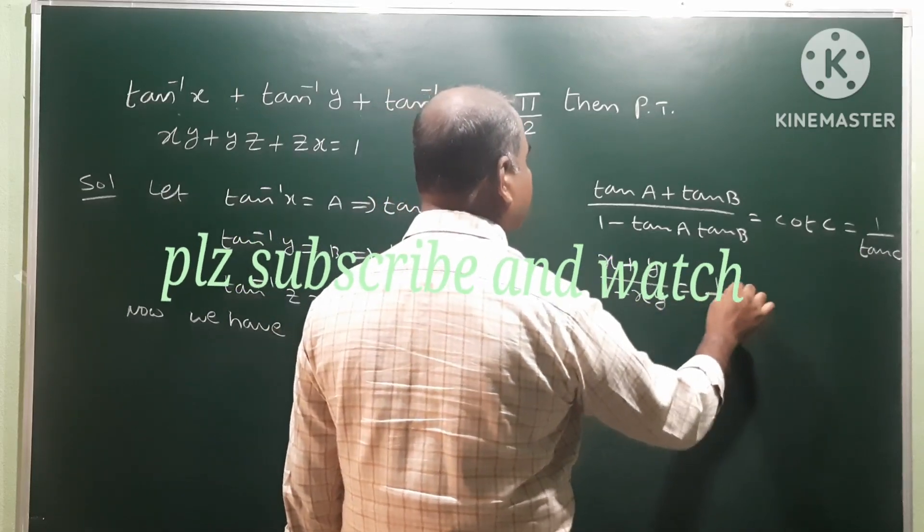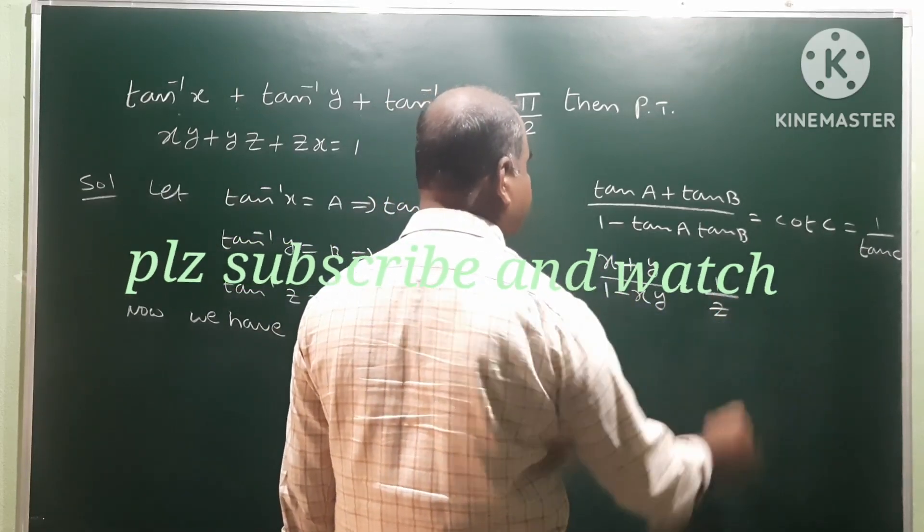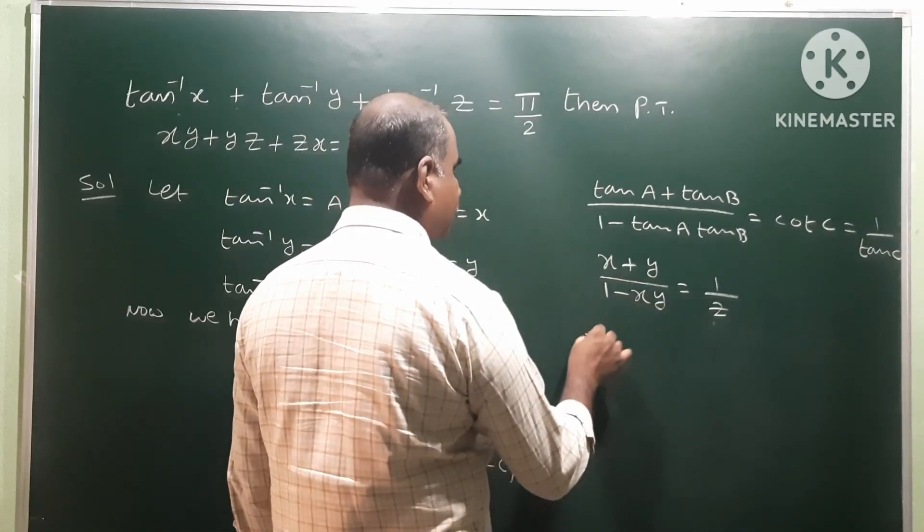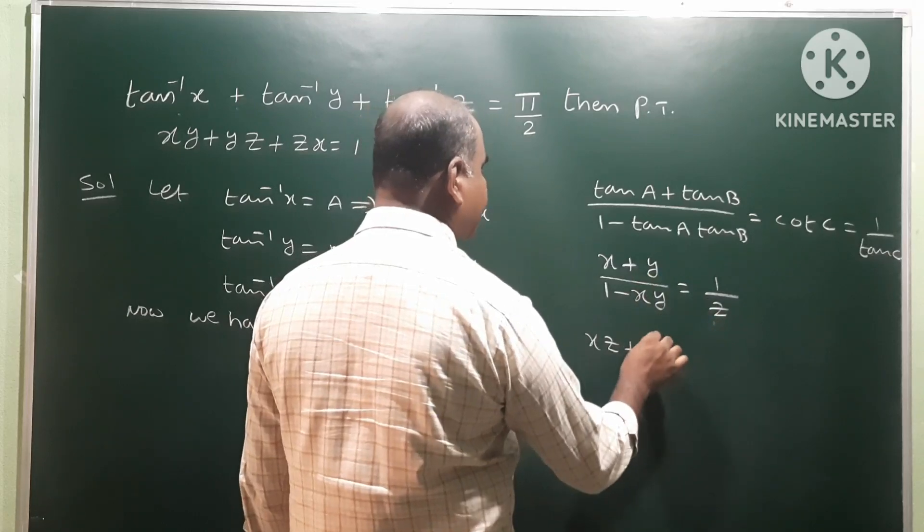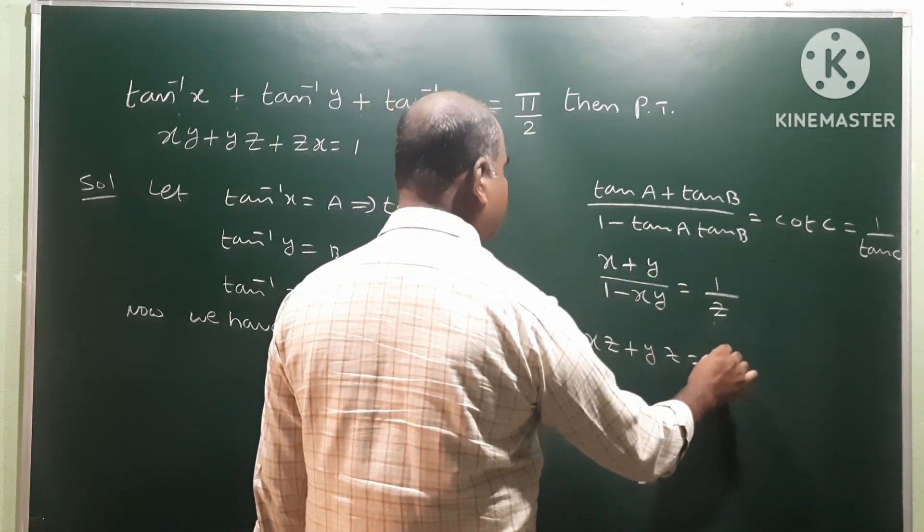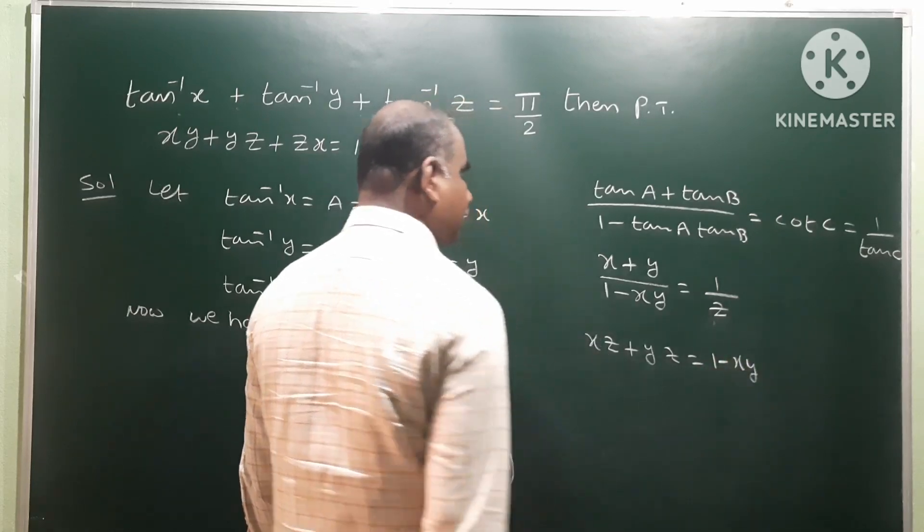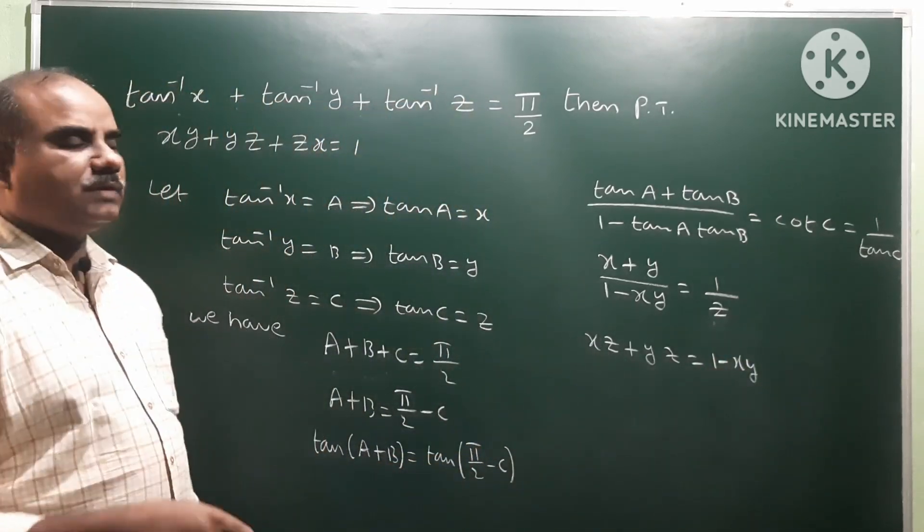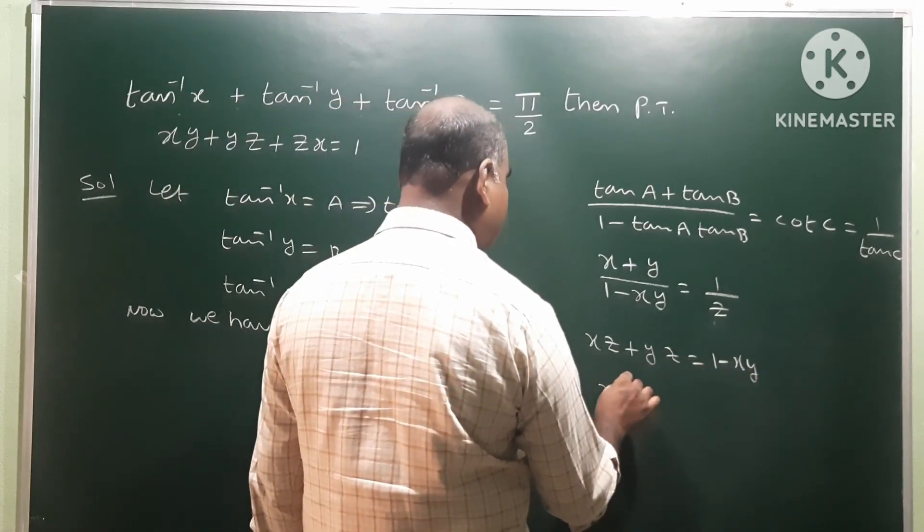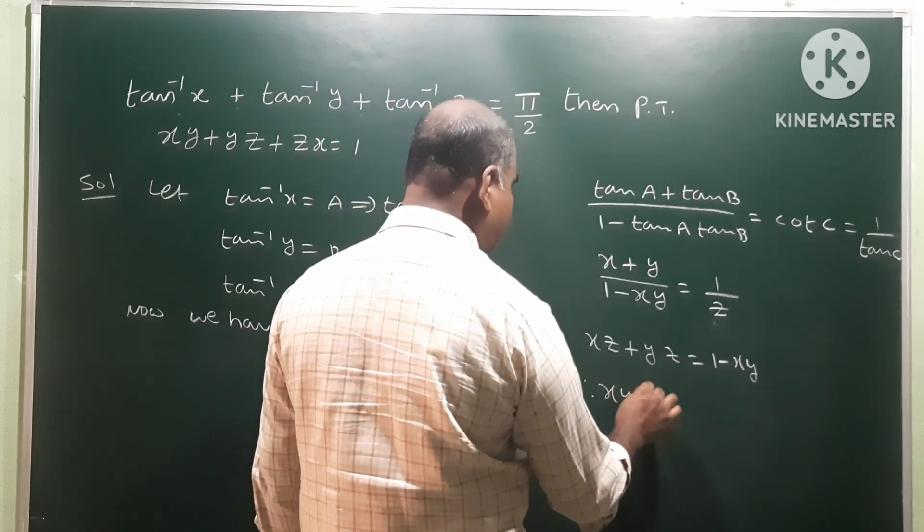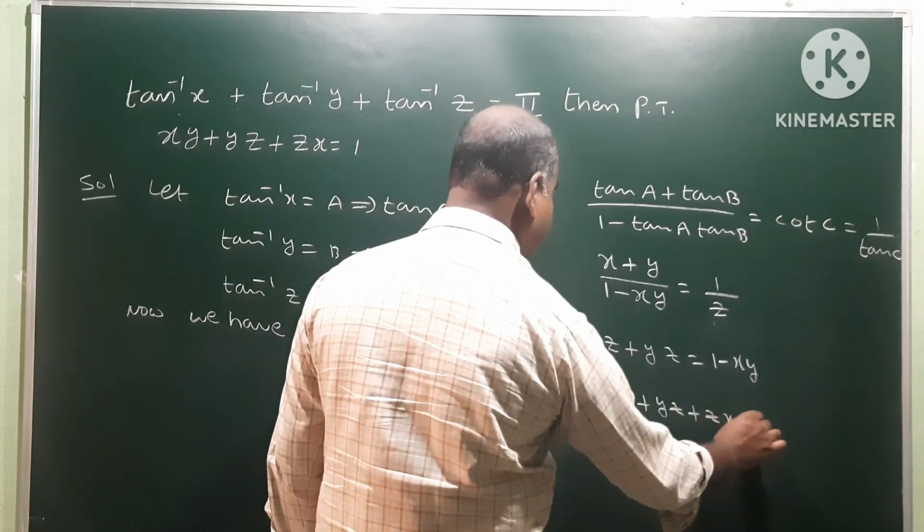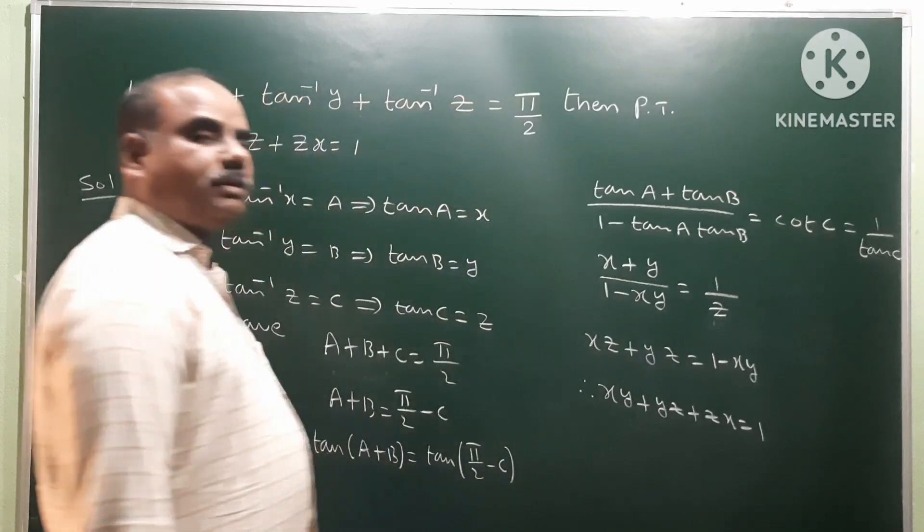That is equal to 1 by tan c means z. Now take cross multiplication: x into z gives xz, y into z gives yz, that is equal to 1 minus xy. Transpose minus xy to left side. Therefore finally we get xy plus yz plus zx as 1. That is our proof.